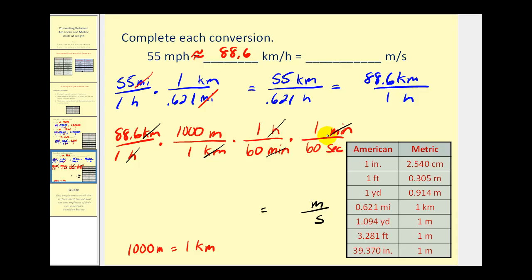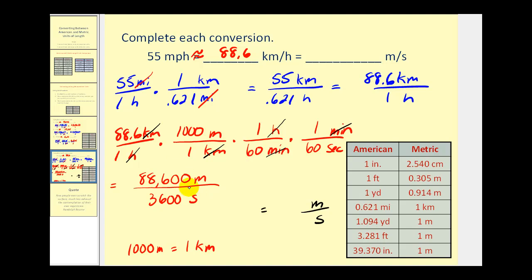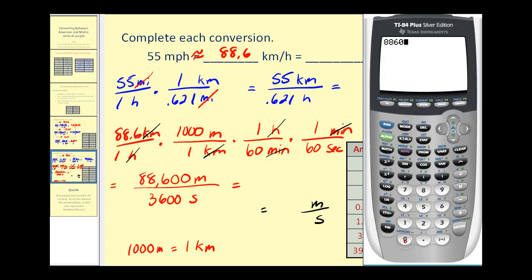Now we just have to find the product of these fractions. Our numerator is going to be eighty-eight point six times one thousand times one times one. Multiplying the numerators together, we'd have eighty-eight thousand six hundred meters. Our denominator would be one times one times sixty times sixty seconds, which would be three thousand six hundred seconds. Since we want our denominator to be one second, we'll divide: eighty-eight thousand six hundred divided by thirty-six hundred is approximately twenty-four point six meters per second.